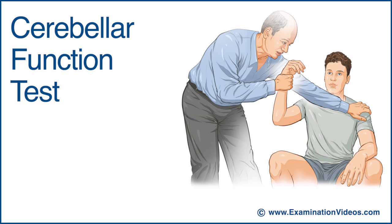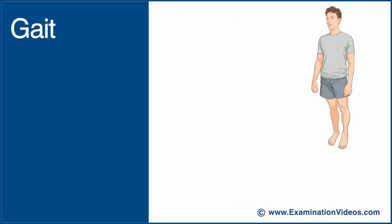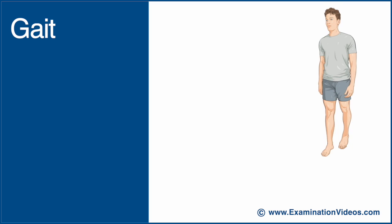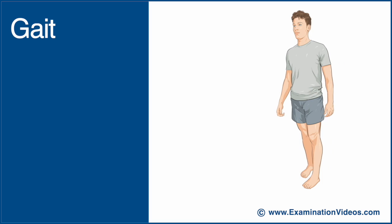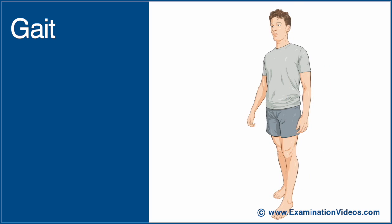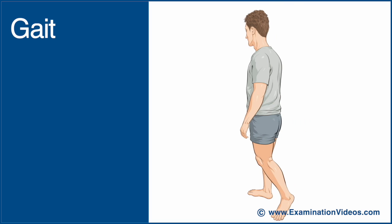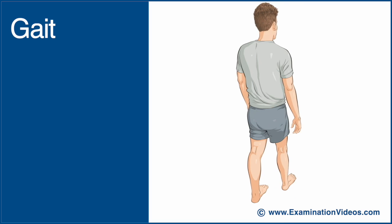Several tests can be performed to assess cerebellar function. To check the gait, ask the patient to walk a few steps in a straight line and then turn and walk back.